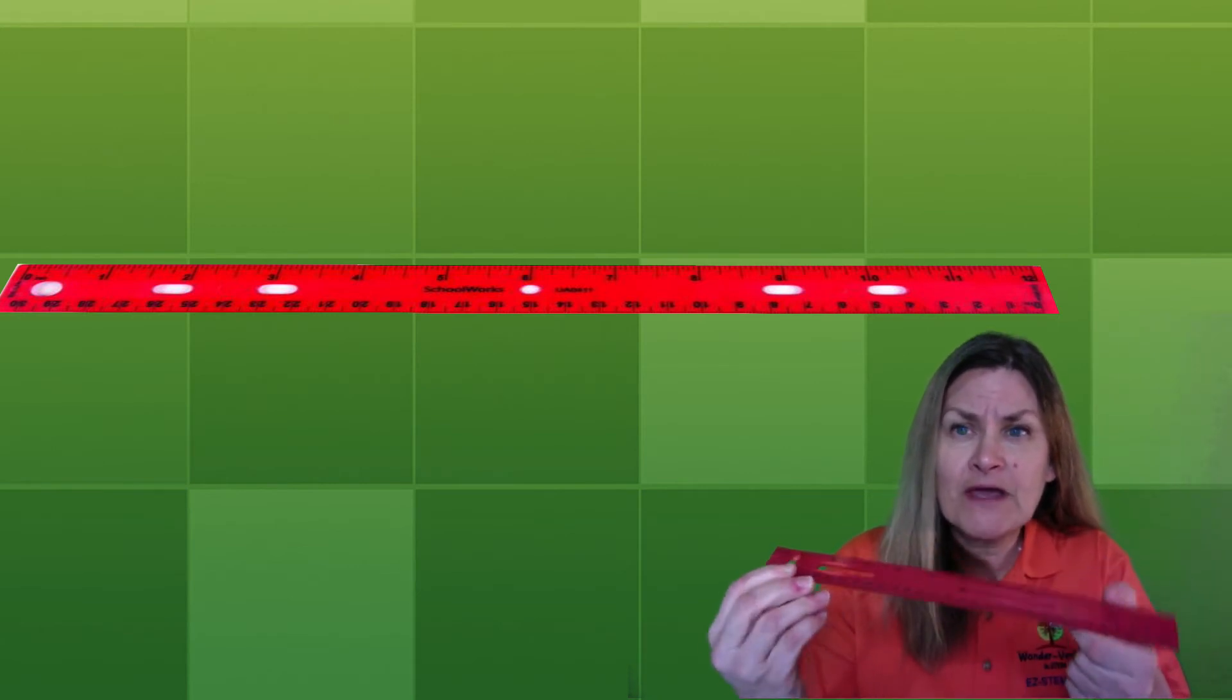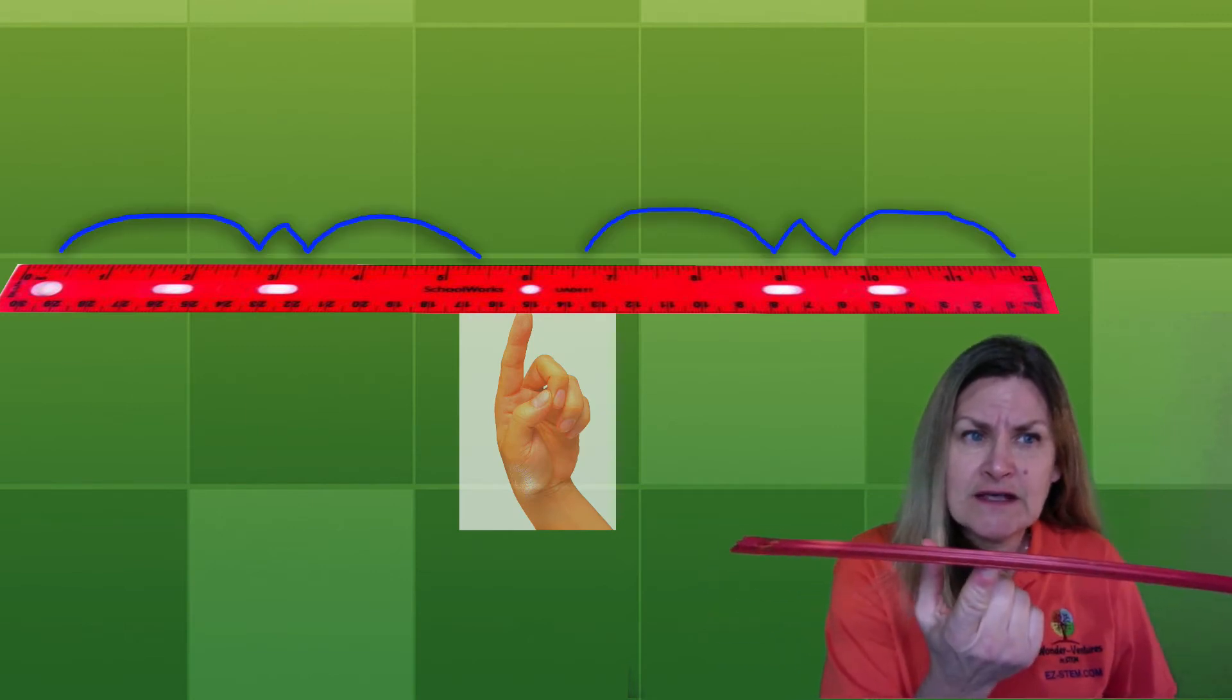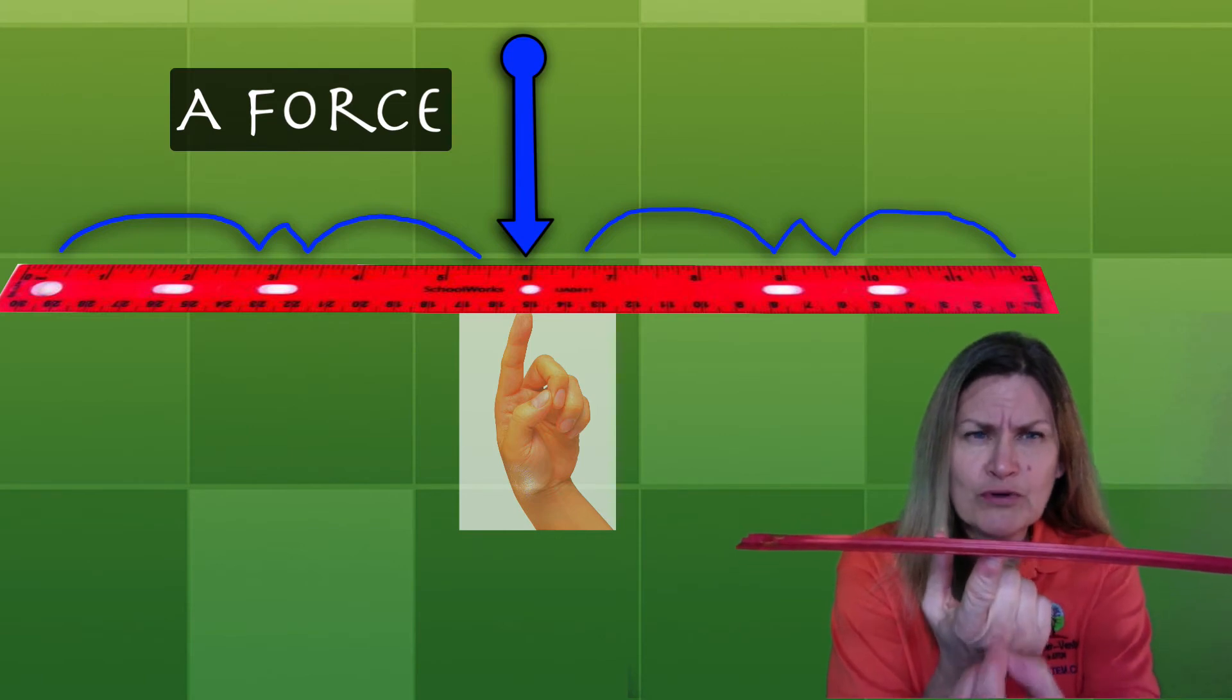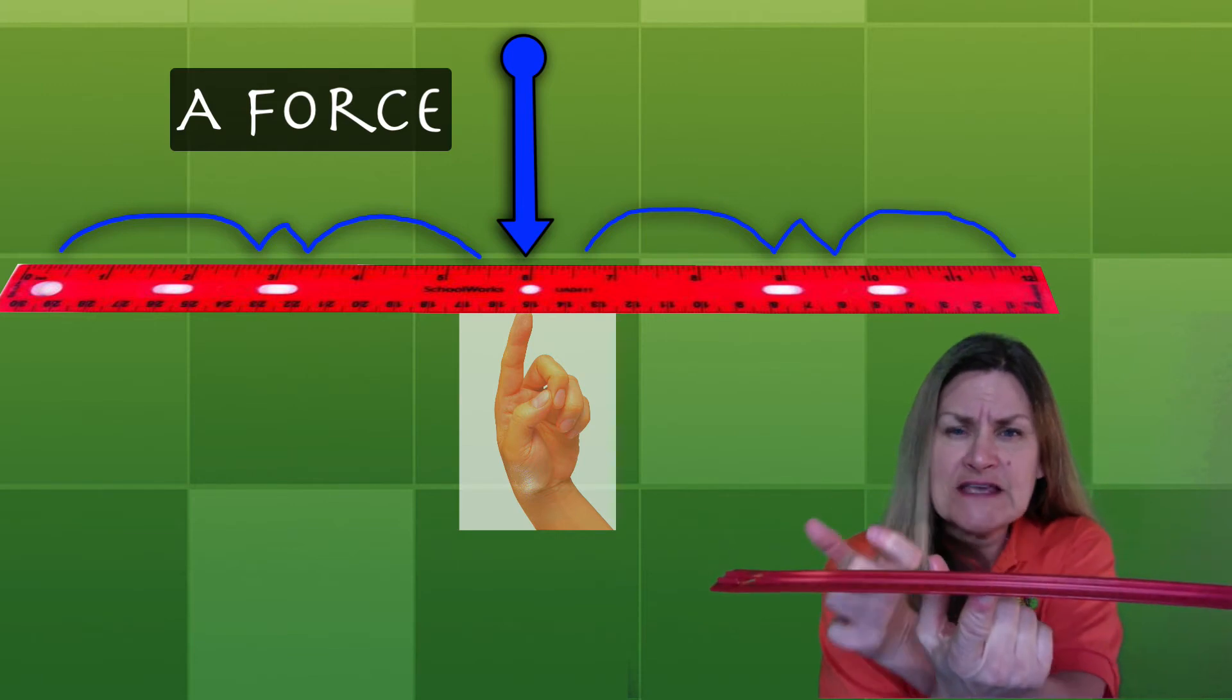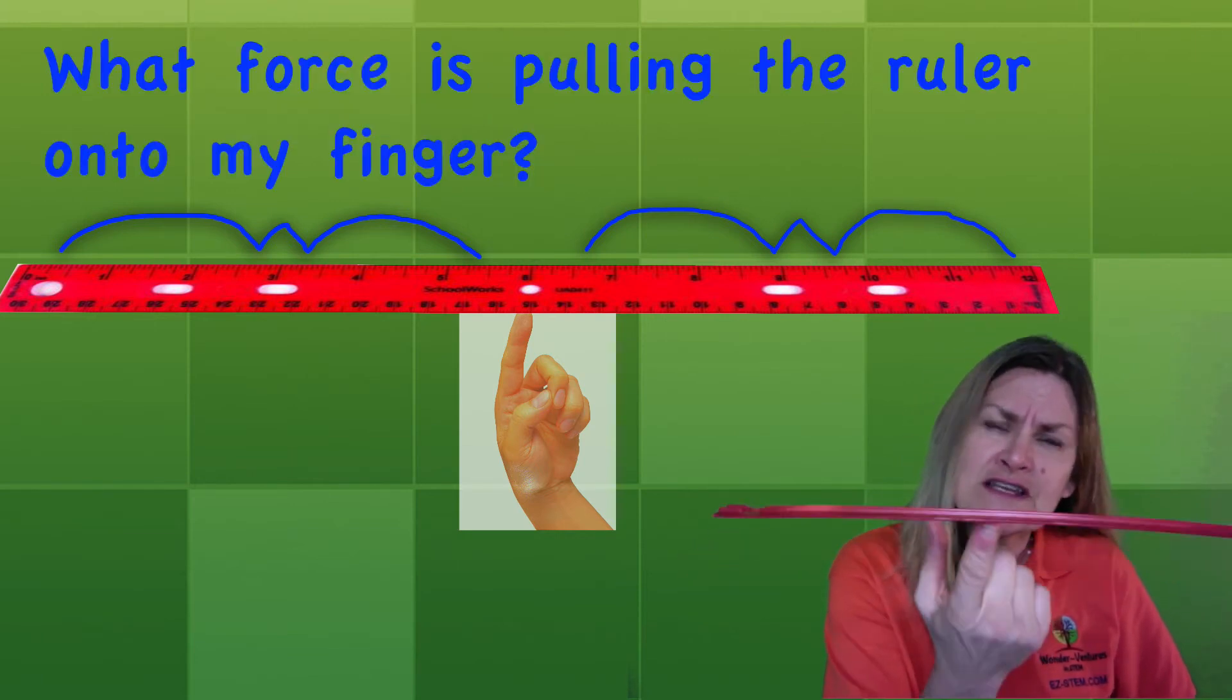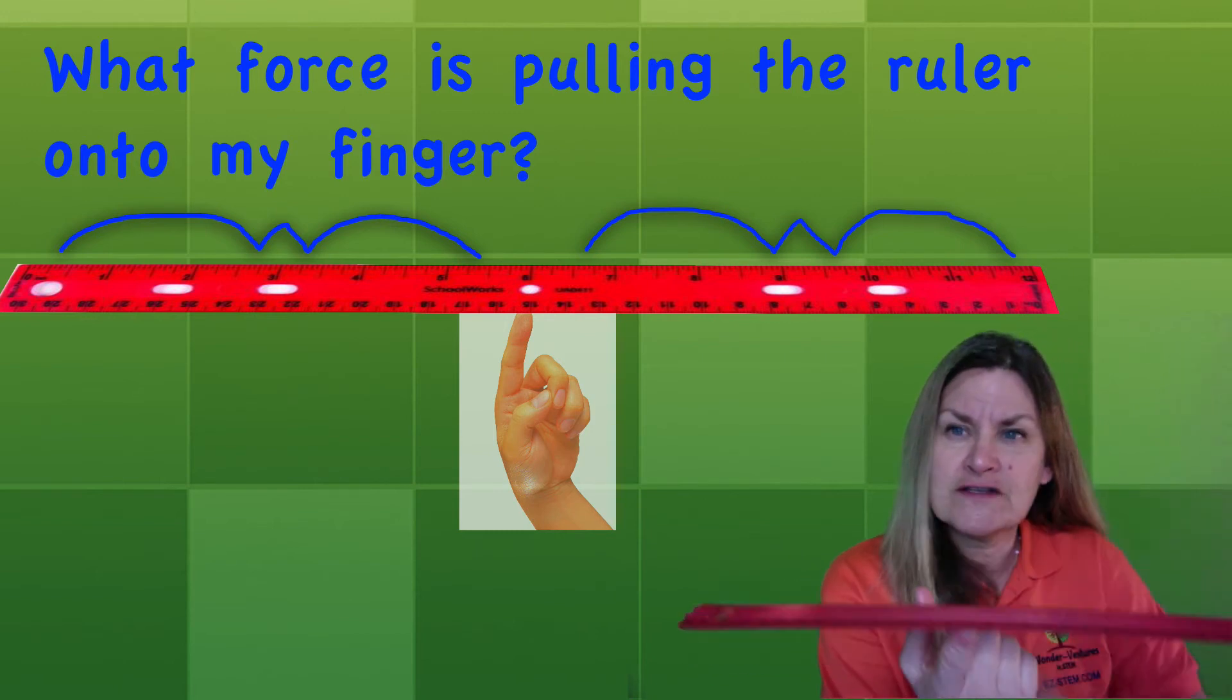Great models and explanations. Good job. I agree. The ruler balances in the center or right at the number six because it is even on both sides. In other words there is a force that's pulling or pushing this ruler down onto my finger. And then the weight is even on both sides. Do you know what force is pushing or pulling this ruler onto my finger?